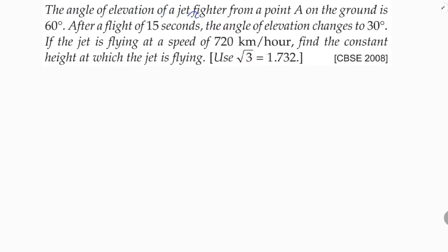The angle of elevation of a jet fighter from a point A on the ground is 60 degrees. After a flight of 15 seconds, the angle of elevation changes to 30 degrees. If the jet is flying at a speed of 720 km per hour, find the constant height at which the jet is flying.